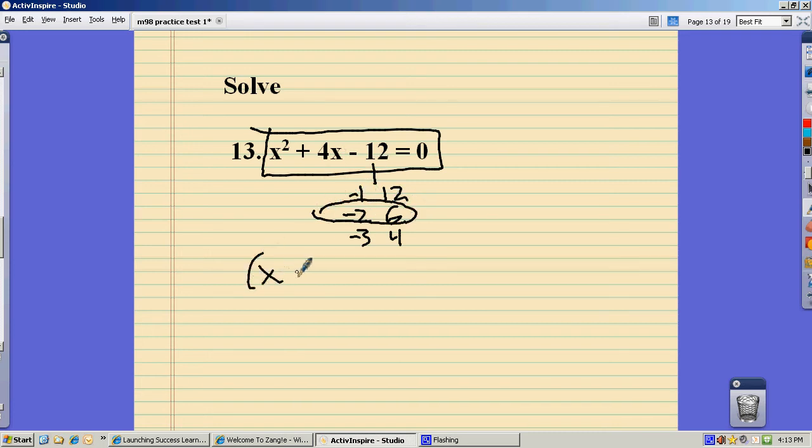So I could factor this into x minus 2 times x plus 6, and that's equal to 0.